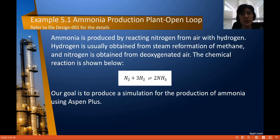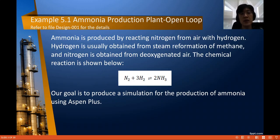The best way to bring you through this chapter is to give you some case studies. We have Example 5.1 about the ammonia production plant — an open loop, meaning we are not going to have a recycle loop in this production plant. Ammonia is produced by reacting nitrogen from air with hydrogen. Hydrogen is usually obtained from the steam reforming of methane and nitrogen is obtained from deoxygenated air. The chemical reaction shows nitrogen reacting with hydrogen to produce ammonia. Our goal is to produce a simulation for the production of ammonia using Aspen Plus.